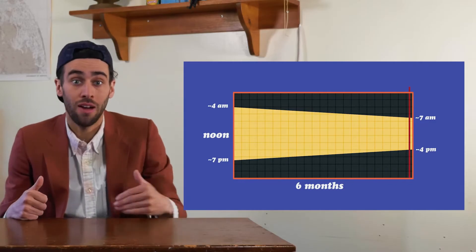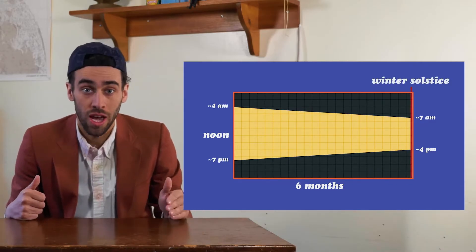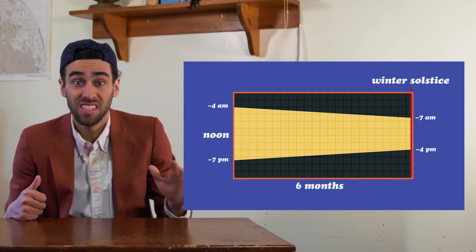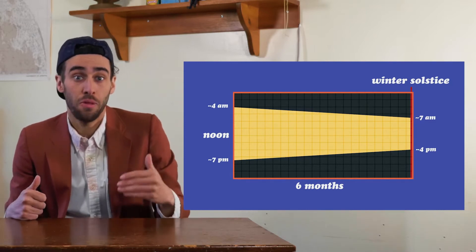Then on the opposite end, we have the winter solstice, the shortest day of the year, where here in Mass, it rises at about 7 a.m. and sets at about 4 p.m.